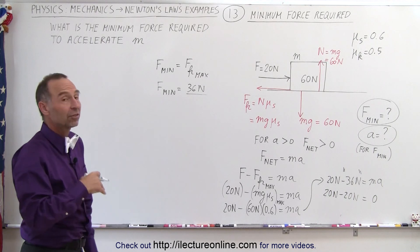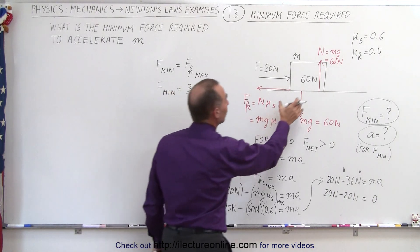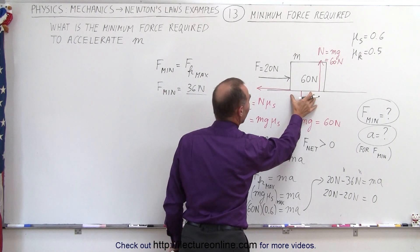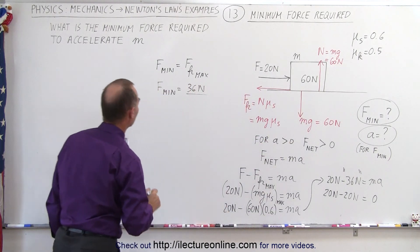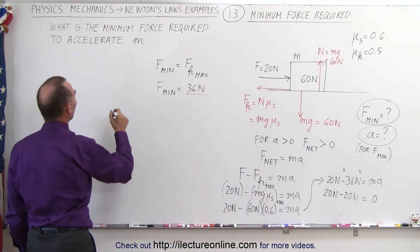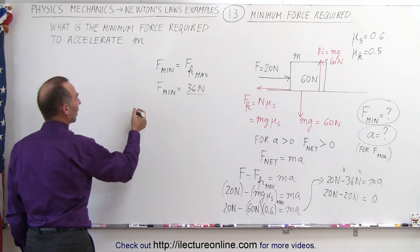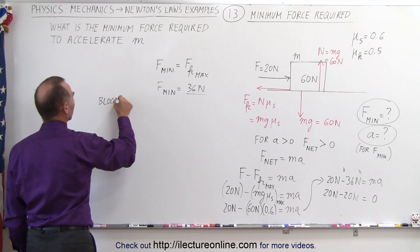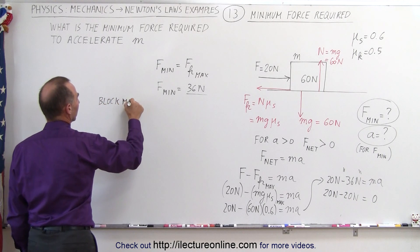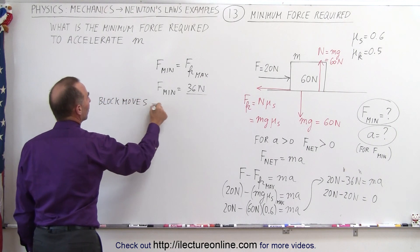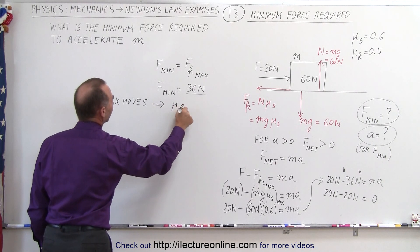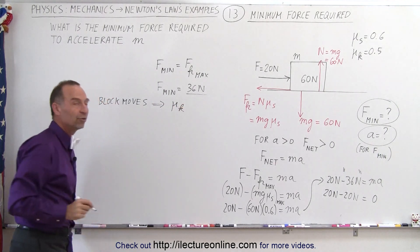Once the object is accelerating and moving, we no longer have the static coefficient of friction. We now have the kinetic coefficient of friction. So once the block begins to move, we use μ_k instead of μ_s.